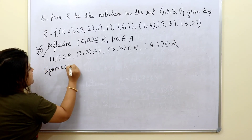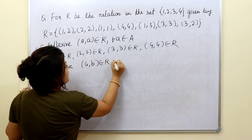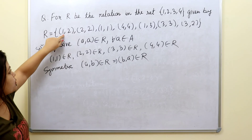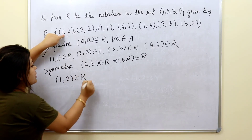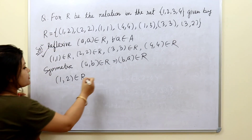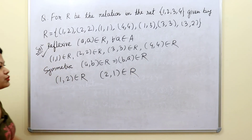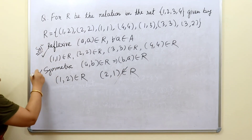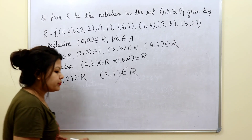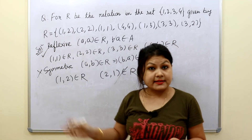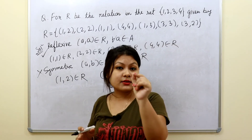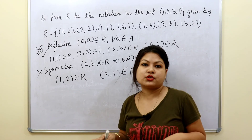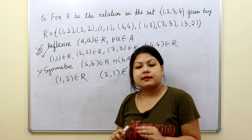Next, checking symmetric: if (a,b) belongs to R, then (b,a) should also belong to R. You can see that (1,2) belongs to R, so according to the symmetric condition, (2,1) should also belong to R. But (2,1) is not present in R. To prove a relation is not symmetric, just one such missing value is sufficient. Since (2,1) is not included, this relation is not symmetric.